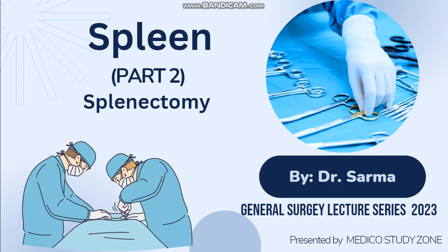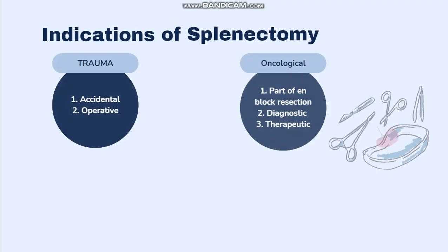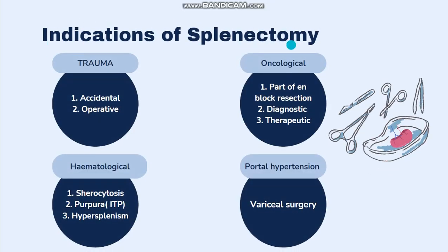In this video we will talk about splenectomy. First of all, the indications of splenectomy. The most important indication is trauma. It can be the result of any accident, or as a part of any operative procedure — as in the mobilization of esophagus, stomach, pancreas, or splenic flexure of colon — where you can accidentally damage the spleen, leading to splenectomy.